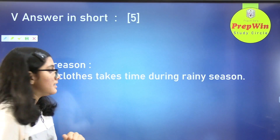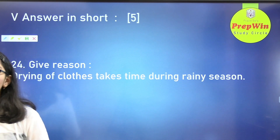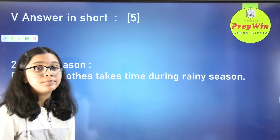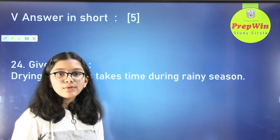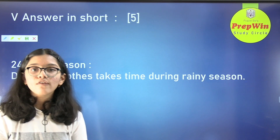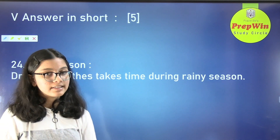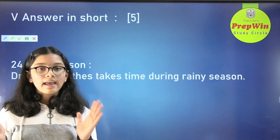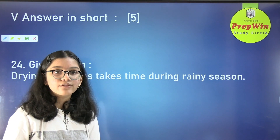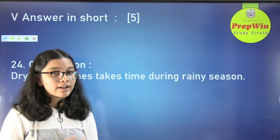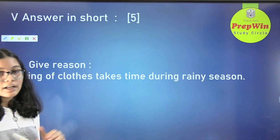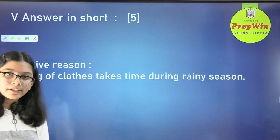Give a reason: drying of clothes takes time during the rainy season. The rate of evaporation decreases due to the presence of humidity in the air. The air is already saturated with water and cannot hold more, so it gradually takes more time.